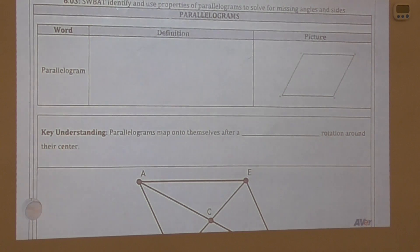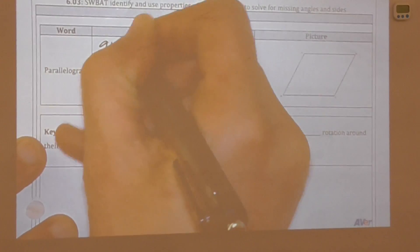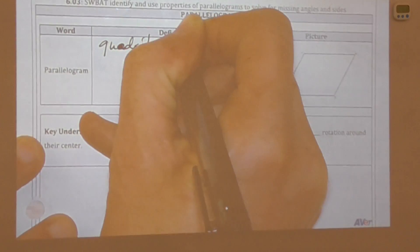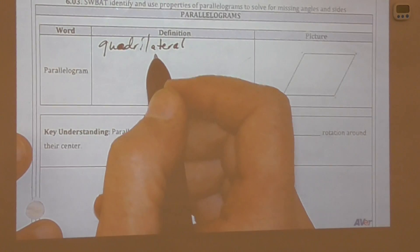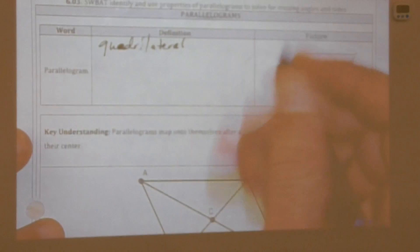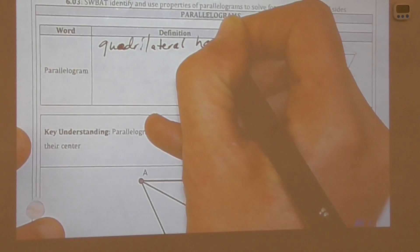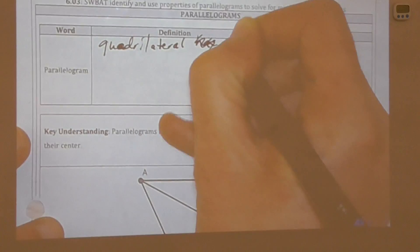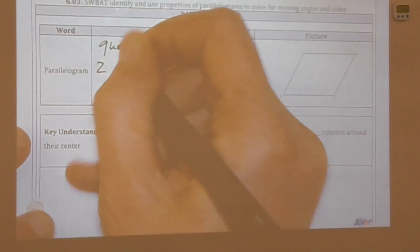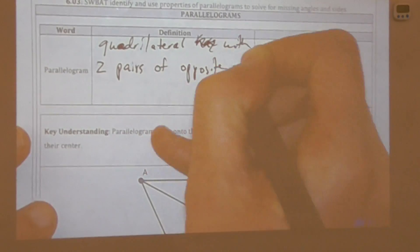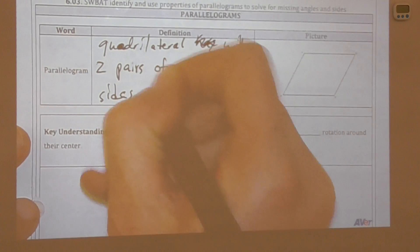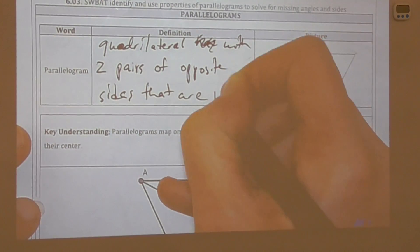We'll start with the definition of a parallelogram. A parallelogram is a quadrilateral, which means we can add all of the angles and get 360 degrees. This quadrilateral has two pairs of opposite sides that are parallel.